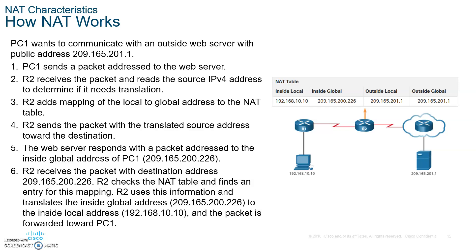Some terminologies we should be familiar with — please write this down. InsideLocal means private IP address. InsideGlobal is the source public IP address. OutsideLocal is the destination public IP address, and typically it is the same as the OutsideGlobal as well. So these two really mean the same thing. When I say InsideLocal, I mean the private IP addresses, and global IP addresses are the public ones placed on the router.